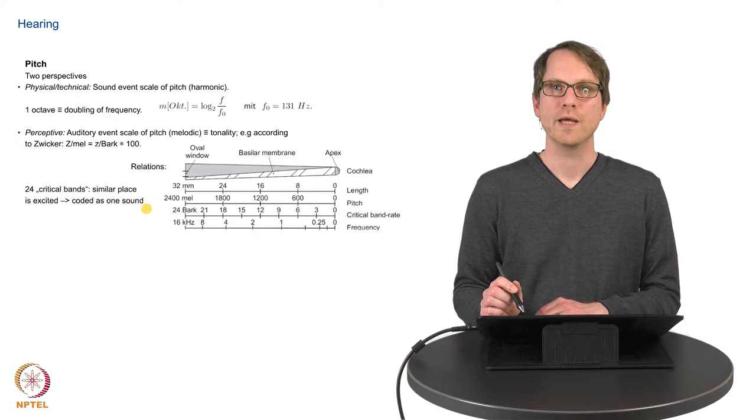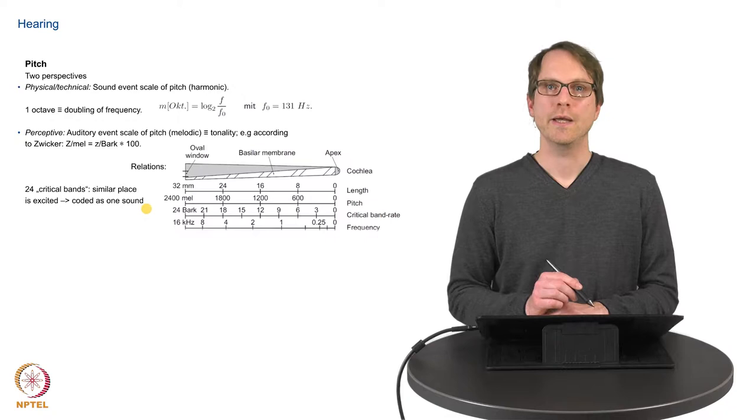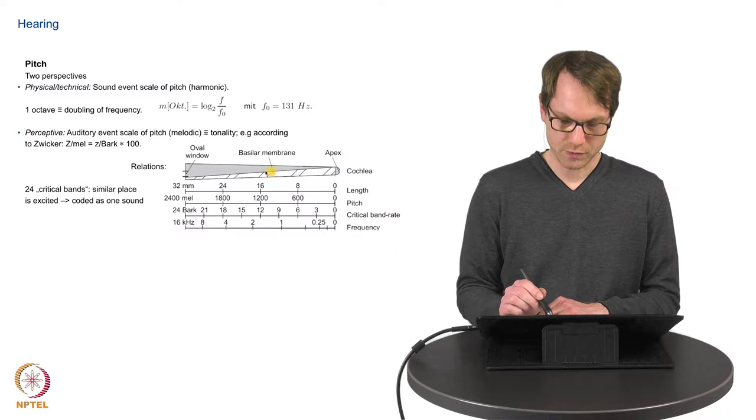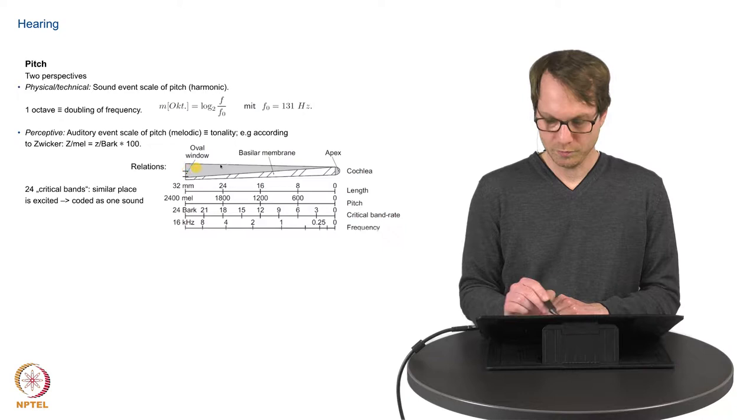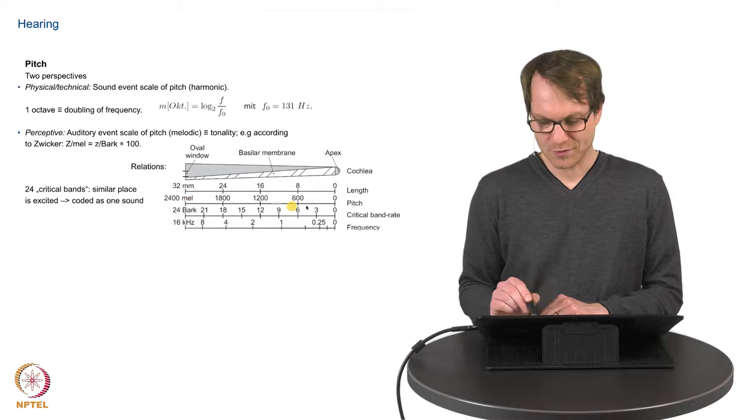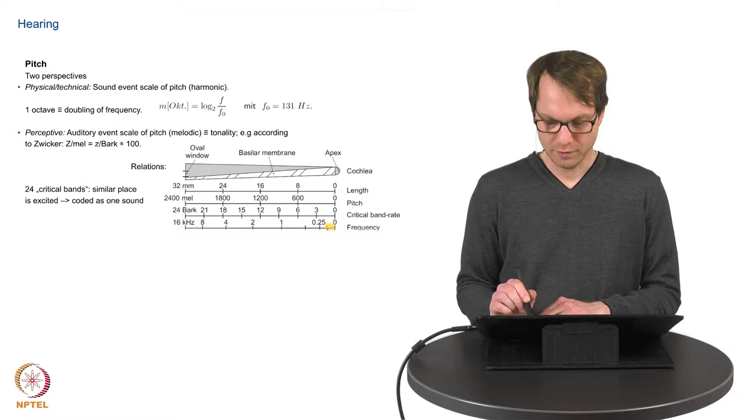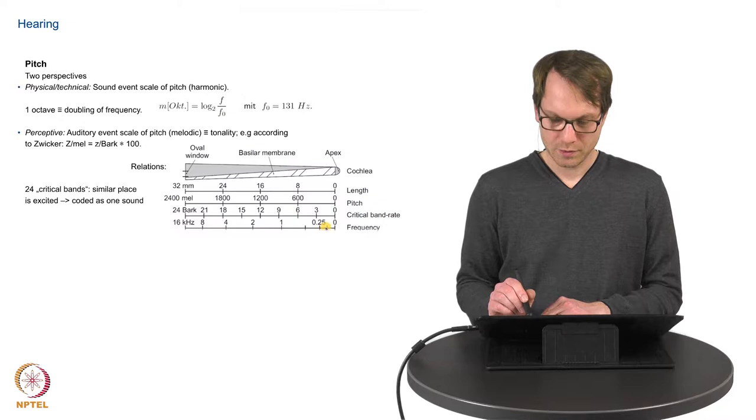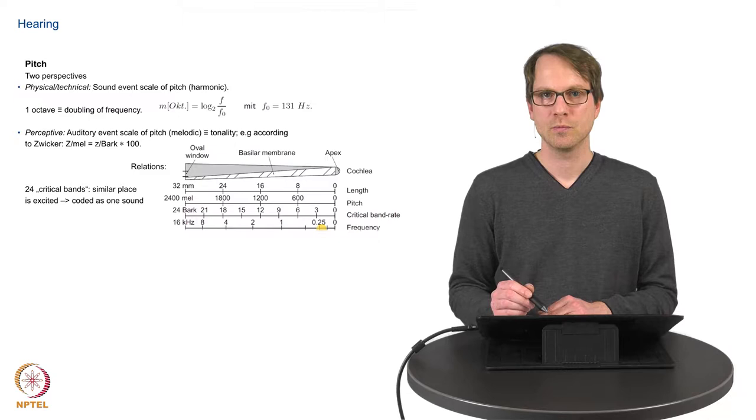According to the basilar membrane we have a relation between the place of the basilar membrane and the perception of pitch. If you have a look here, this is a scheme of the length of the basilar membrane from the oval window to the apex. Here we have the length in millimeters, and according to that two kinds of scales related to pitch perception. And here we have the actual physical or technical scale, the frequency. Just because our basilar membrane has a certain shape we don't have a linear pitch perception.